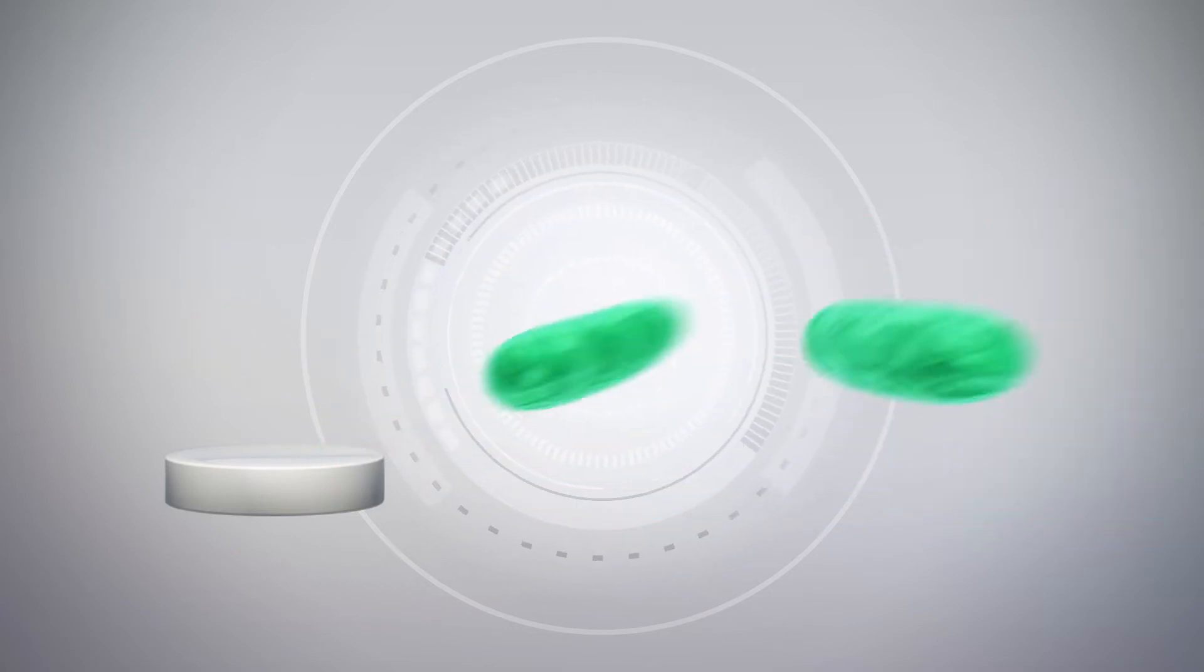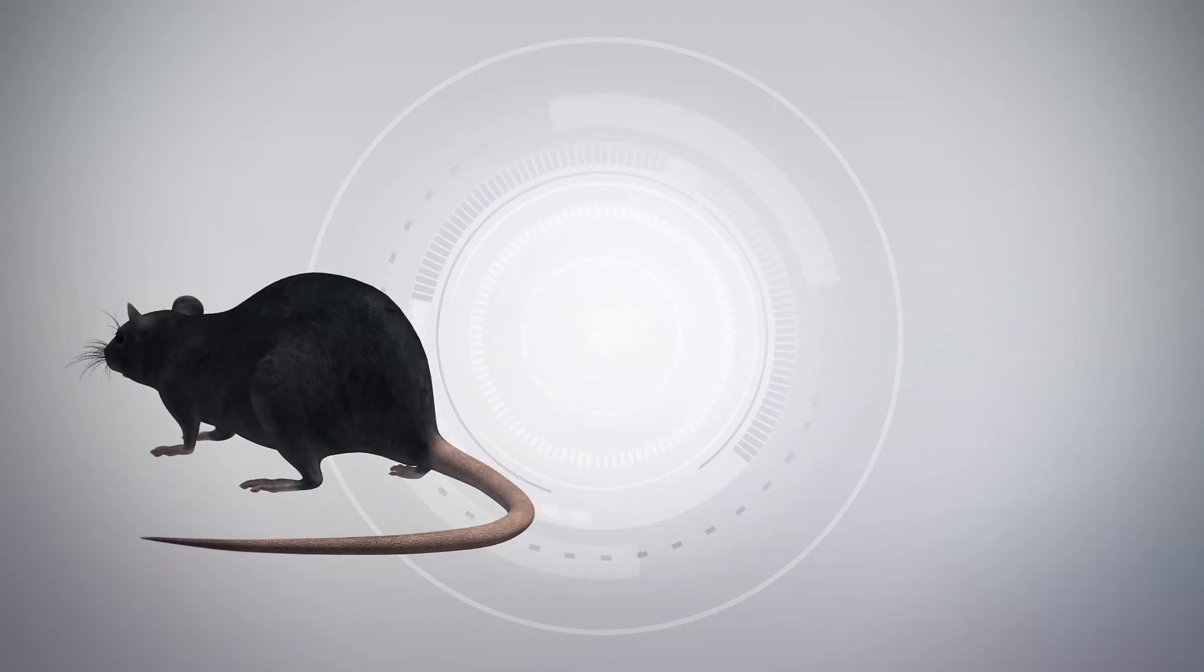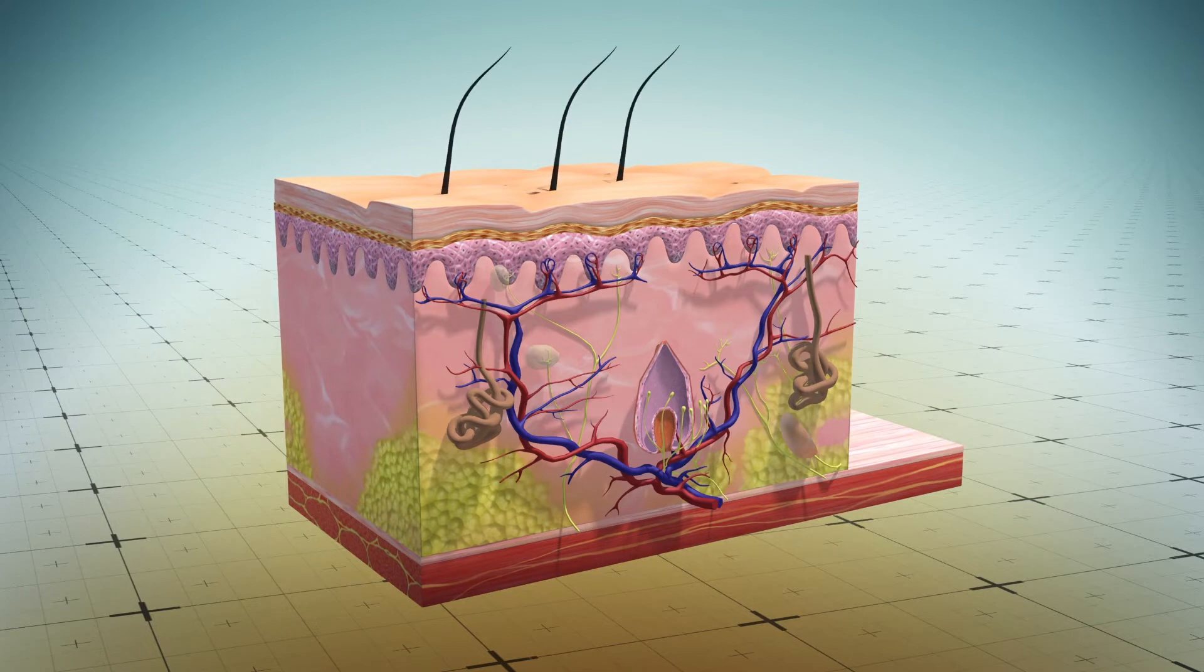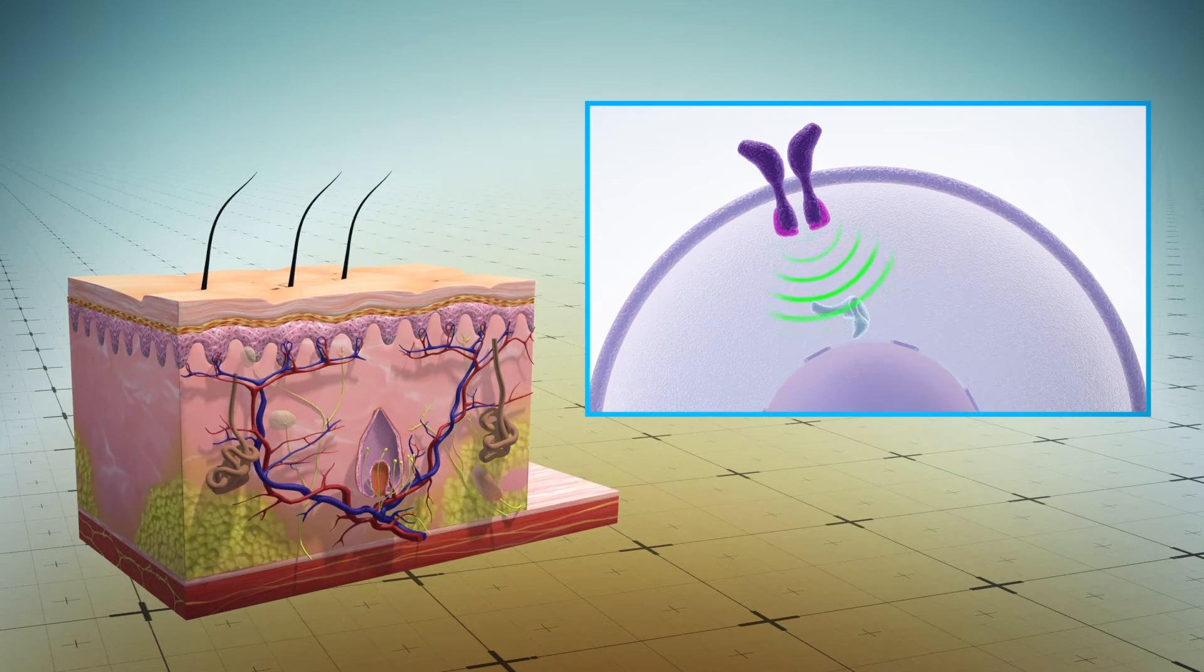This includes JAK inhibitors, which are found to reawaken resting hair follicles in mice when applied on the skin. Researchers had previously discovered a pathway called JAK-STAT in the stem cells of resting hair follicles that keeps them in a dormant state.